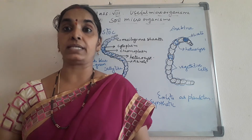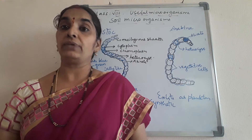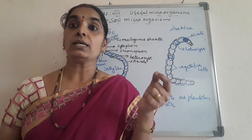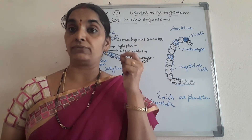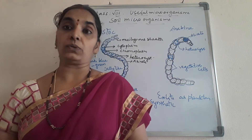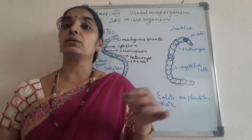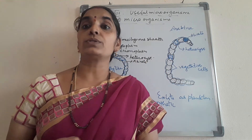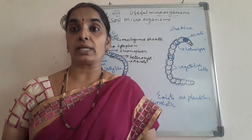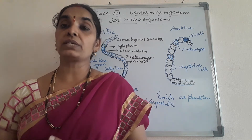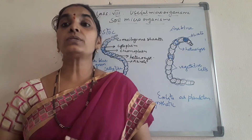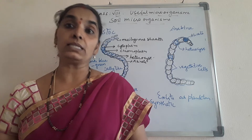The word 'vaccine' itself was discovered from the cowpox. The word 'vaccine' comes from the word 'vaca,' which means cow. So vaccines were discovered from microorganisms, and we use them to cure so many diseases. Microorganisms are also present in the soil.